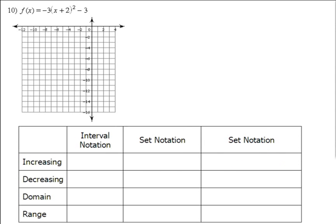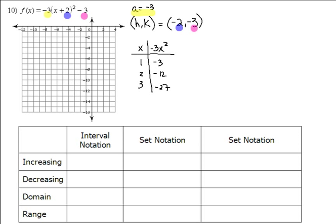Let's go ahead and take a look at a quick example. Here, for example number 10, we've got f(x) equals negative 3 times the quantity x plus 2 squared minus 3. So let's go ahead and write down what all of our values are for a, h, and k. Did you correctly identify a as being negative 3? And h and k, the coordinates of your vertex, at negative 2, negative 3. Hopefully, you got all of those pieces correct.